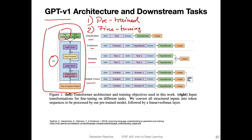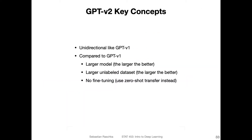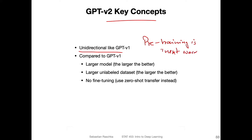GPT version two made a significant change to that procedure. The key concepts behind GPT version two are: first, it is similar to GPT-1 in that it is also unidirectional, so pre-training is still next word or next token prediction. However, the version two model is significantly larger. The argument is the larger, the better — they did experiments with smaller and larger models and saw that the larger the number of parameters, the better the performance. Similarly, a larger dataset helps with model performance.